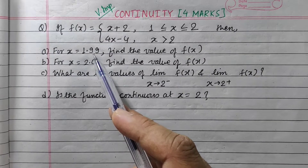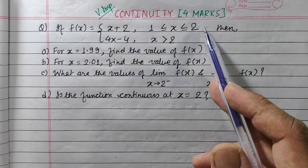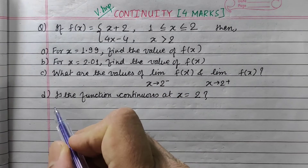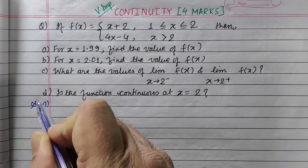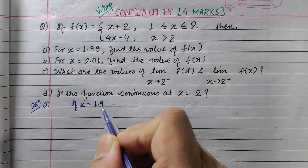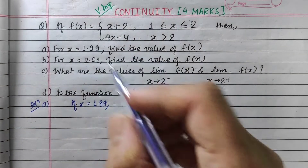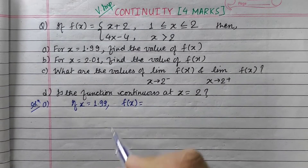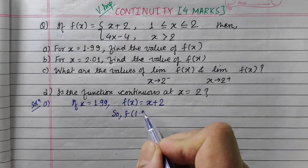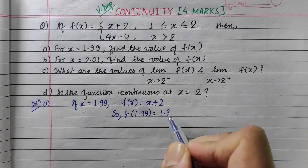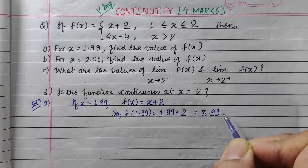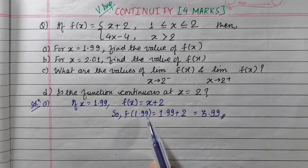If x is equal to 1.99, it is less than 2. So we use f(x) = x plus 2. If x is equal to 1.99, then f(1.99) is equal to 1.99 plus 2, which gives f(1.99) is equal to 3.99.